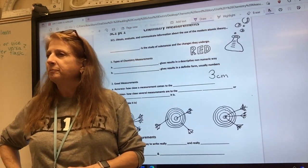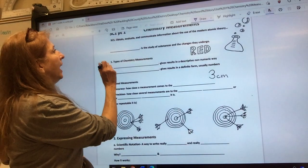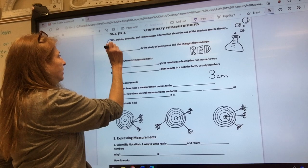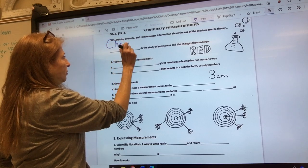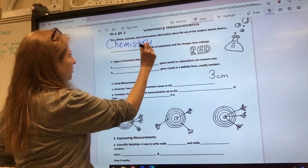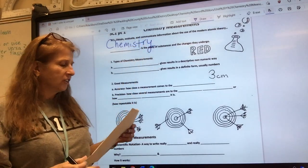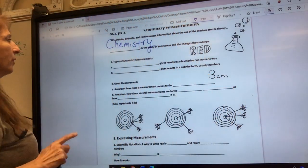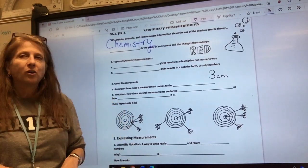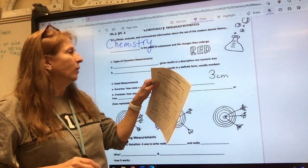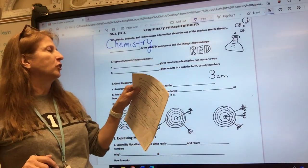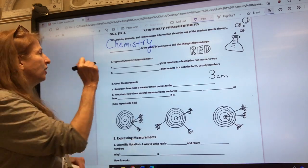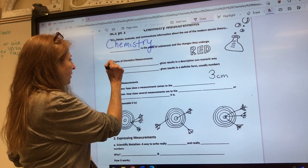What do you think is the study of substances and the changes they undergo? Chemistry, it's the class we're in. In chemistry there's two kinds of measurements. Which one gives the results in the descriptive non-numeric way? Qualitative. Y'all already know all of this, so smart.